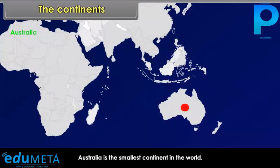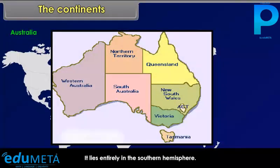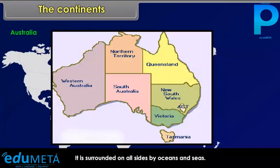Australia is the smallest continent in the world. It lies entirely in the Southern Hemisphere and is surrounded on all sides by oceans and seas. Because of its smallest size, it is called an island continent.